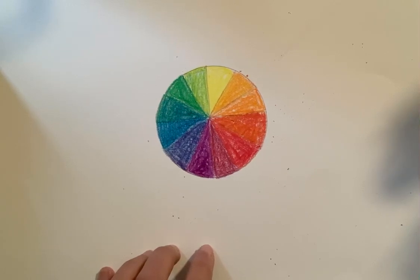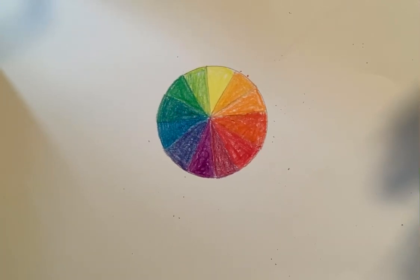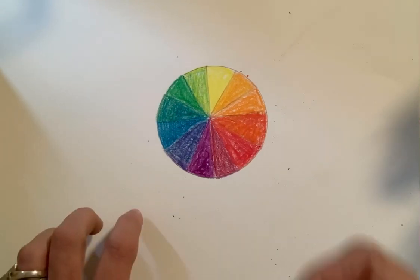That's going to be pretty much as far as we get with our color wheel. Now the second part of this project is to add an eye to the outside of this.